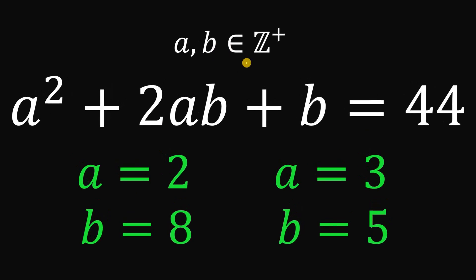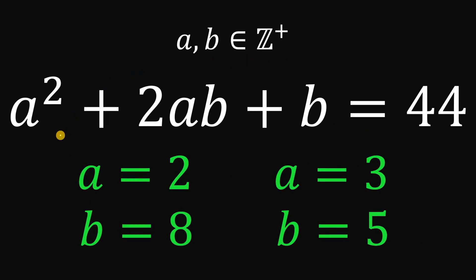Therefore, given that a and b are both positive integers, and this equation a squared plus 2ab plus b equals 44, then we found two different pairs for a and b. We have a equals 2 and b equals 8, and we have a equals 3 and b equals 5. And as always, we are done.